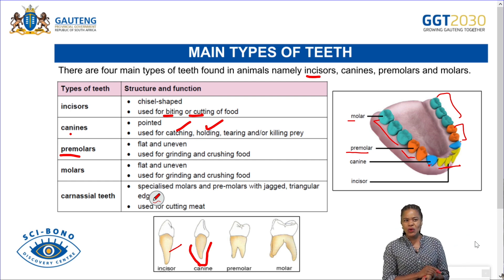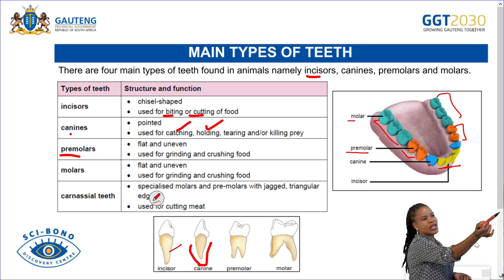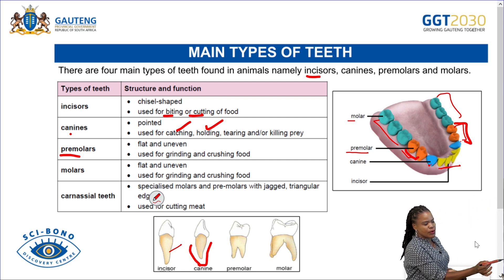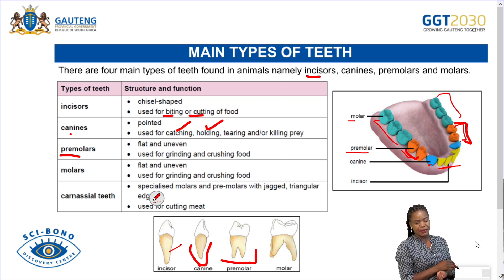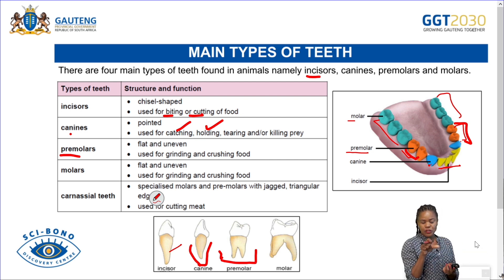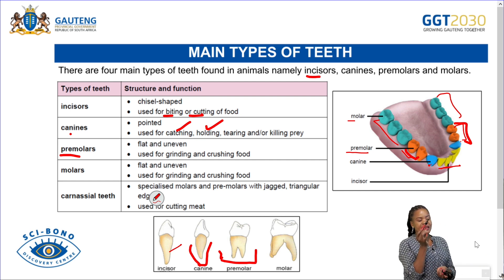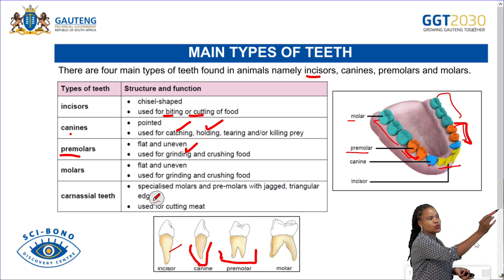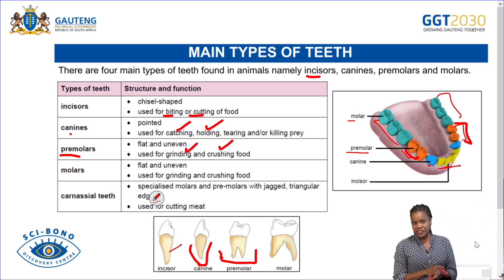The premolars — the orange ones in the diagram — when we look at their shape, they are flat but uneven, not pointed. The function of premolars is to grind and crush food.